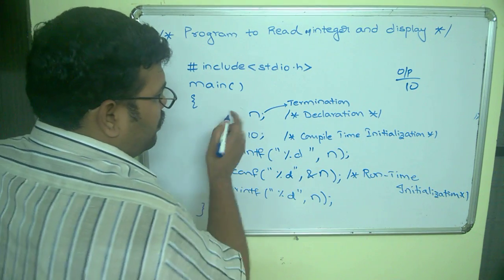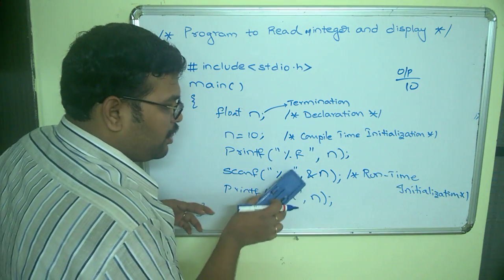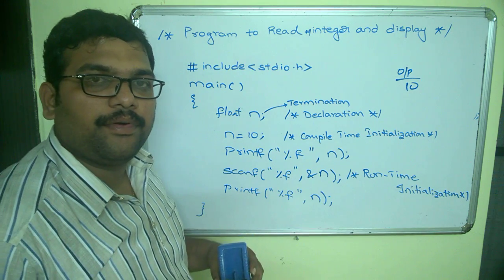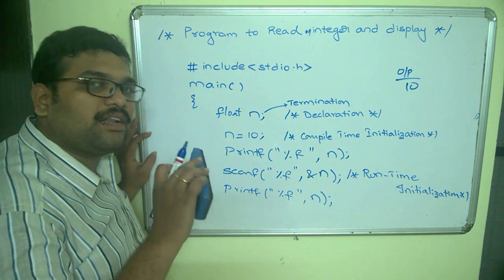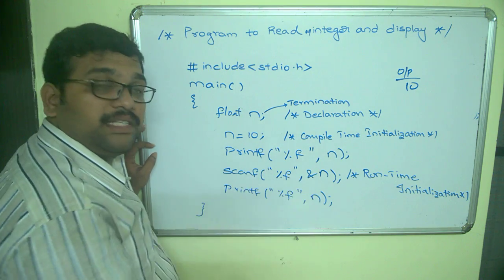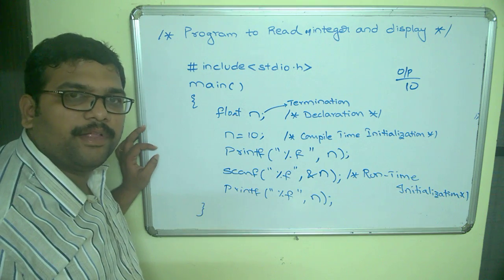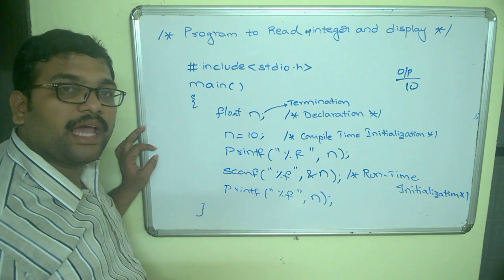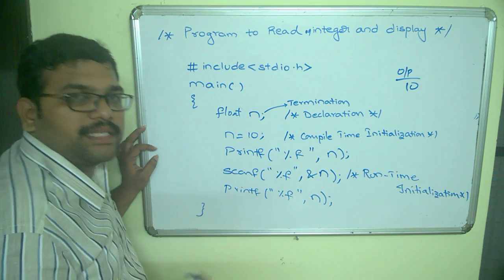Similarly, we can use float instead of integer — replace the control string %d with %f in all three places: the declaration, scanf, and printf. In the next session we will learn about character initialization, which is somewhat different from integer and float. The runtime initialization is the same for all data types, whereas direct initialization differs for character data type. We will also see a program executing on the compiler and cover the character data type initialization. Thank you.